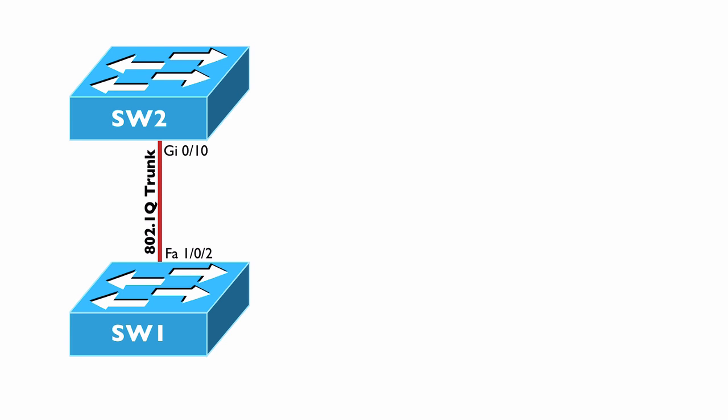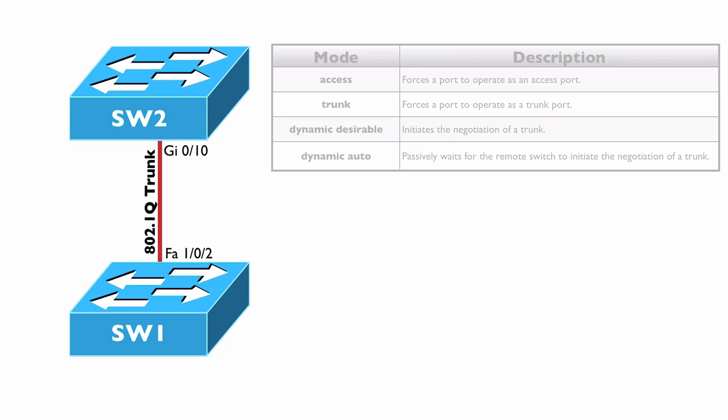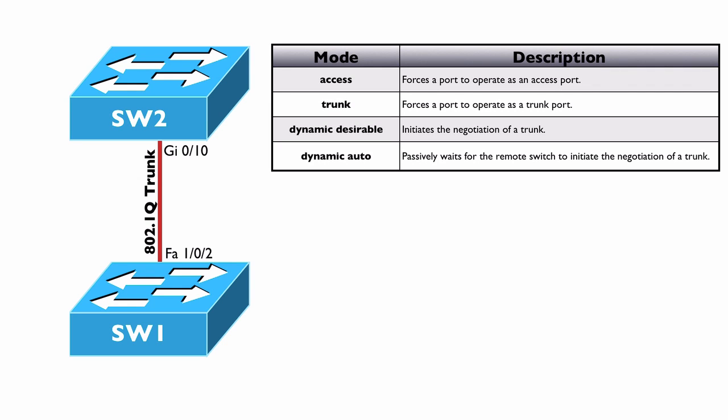Let's say that we want to create a trunk interconnecting switch SW1 and SW2. Specifically, the encapsulation type we want to use is IEEE 802.1Q. When we set up a trunk port on a switch, we can specify a specific mode of operation. We've already seen the access mode. The access mode says to a port: you are an access port, you're going to belong to one VLAN. If we say that a port is operating in trunk mode, we're forcing it to be a trunk, but there's something subtly happening in the background.